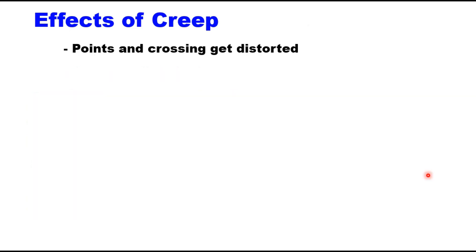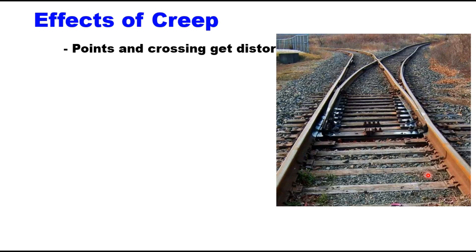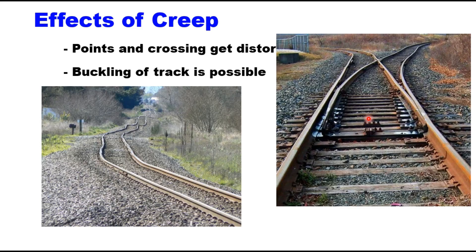Points and crossings get distorted due to creep, making it difficult to maintain correct gauge and alignment. The interlocking mechanism of points and crossings also gets disturbed, making switches difficult to operate. In some cases, if the creep is very excessive and there is negligence in maintenance, buckling of the track is also possible.